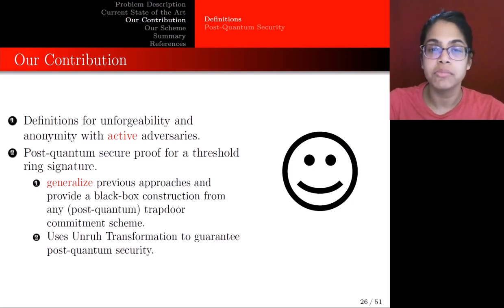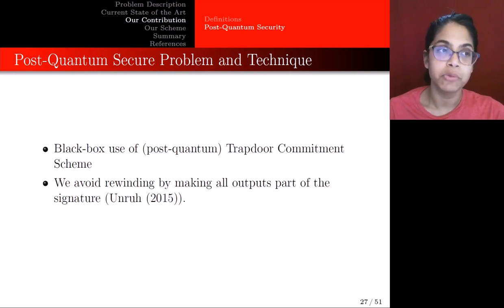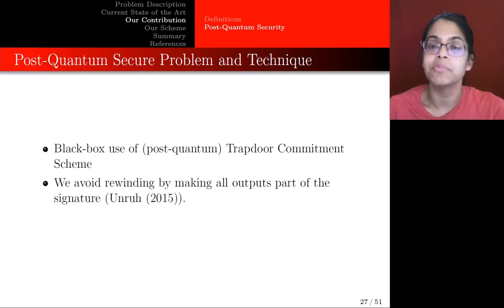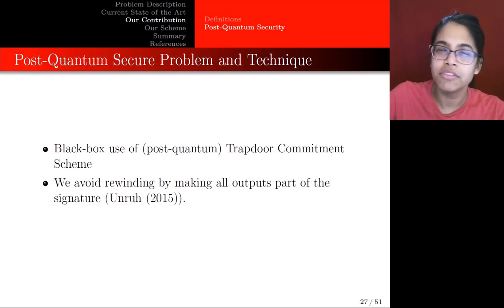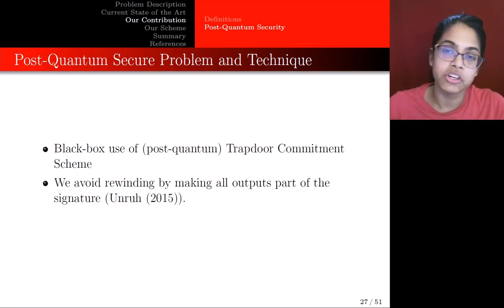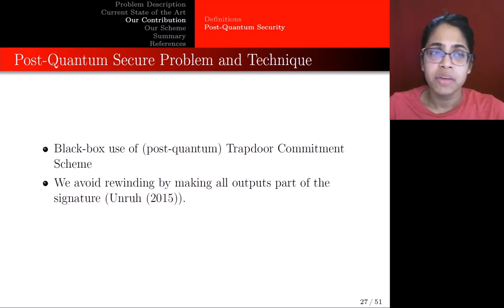Next, we have a post-quantum secure proof. To ensure post-quantum security, we make black-box use of trapdoor commitment schemes, and we need a post-quantum secure trapdoor commitment scheme. Because of this black-box use, anyone who would like to instantiate a particular threshold ring signature scheme can use any trapdoor commitment scheme they like, and they will have a post-quantum secure threshold ring signature scheme. Our scheme uses the Unruh transformation, and with the Unruh transformation we can avoid rewinding. We avoid rewinding by making all outputs part of the signature.